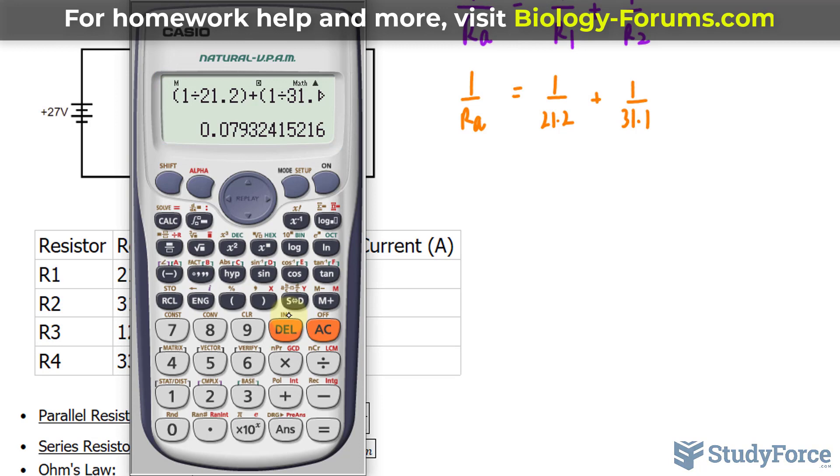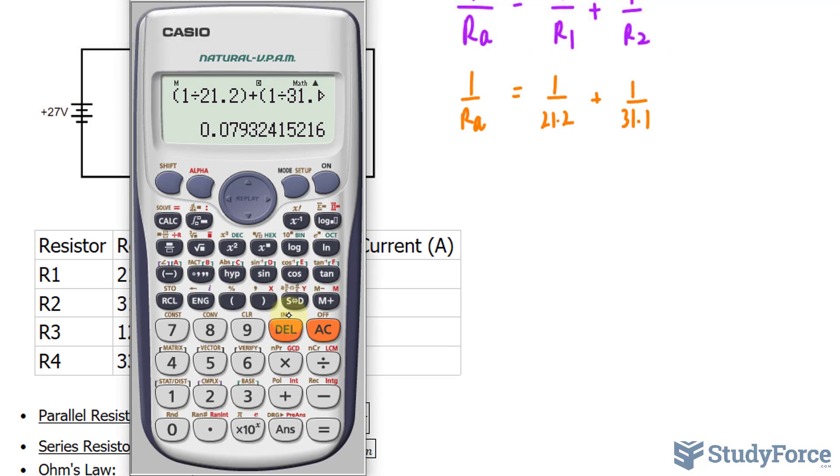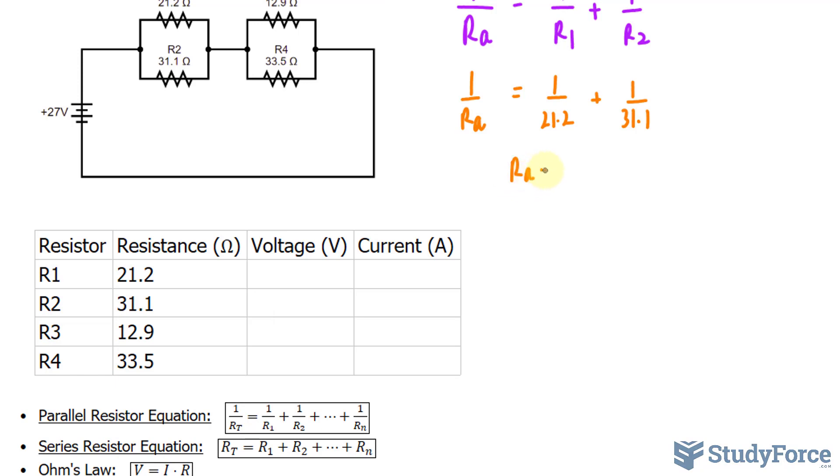Now don't write this number down on your sheet. We want to keep these decimal places so that we don't run into rounding errors later on. Next, what I do is I take 1 divided by the answer that my calculator gave me. And I'll just click ANS to retrieve that. This tells me that RA is 12.606. RA is equal to 12.606 ohms.